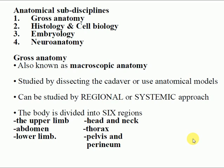Gross anatomy is also known as macroscopic anatomy. In macroscopic anatomy, we explain anatomy by viewing structures using our naked eyes without a microscope. Gross anatomy can be studied by dissecting cadavers or using anatomical models. In this module we study theory of the whole body from head and neck to lower limb, and then after studying theory we go to dissect the cadaver to see what we studied in theory in the real human body.